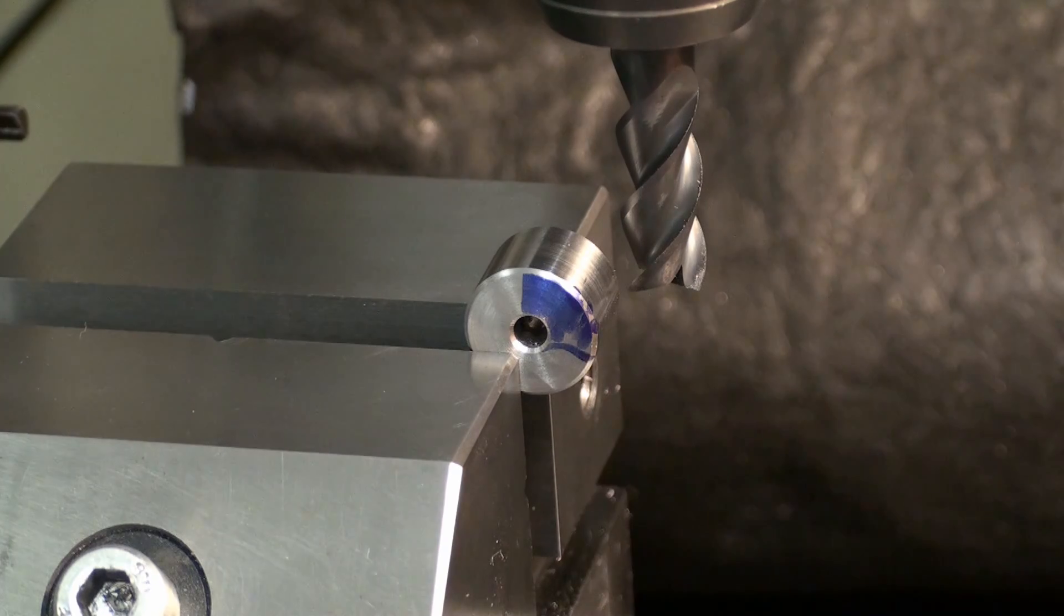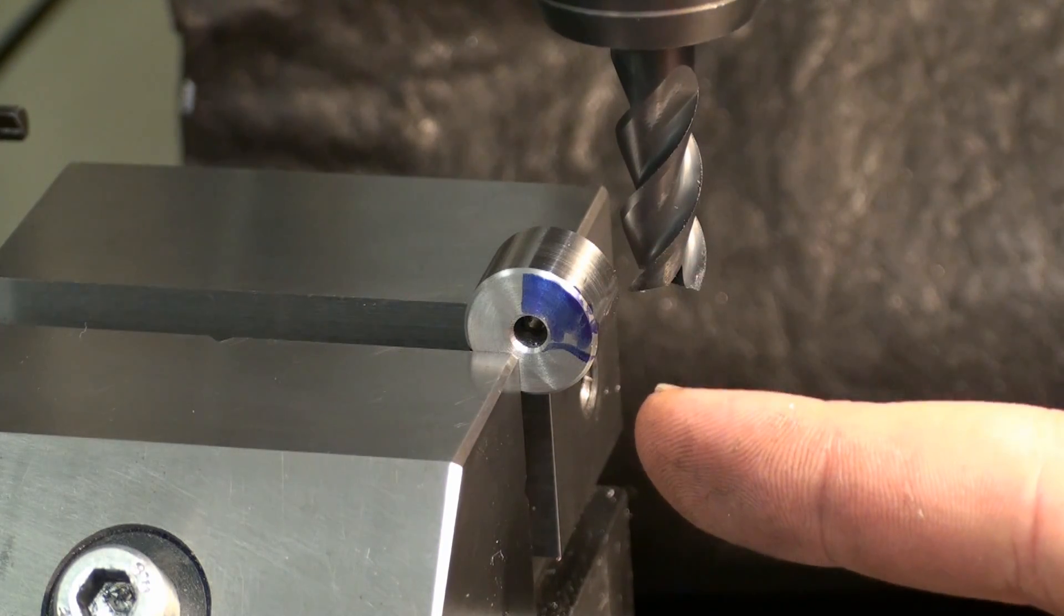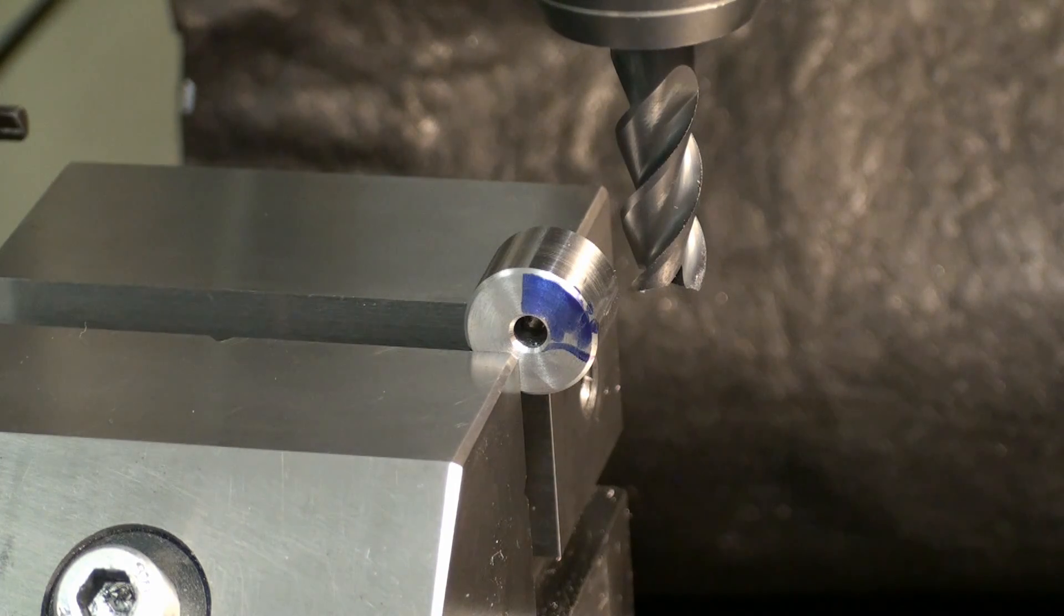So we're almost there. Then we take a light skim pass and measure it and then we finish it to the nominal size.